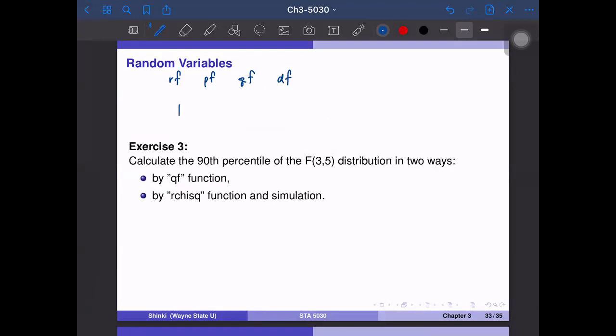For example, if you want to calculate probability of F distribution with df_1 equals 2 and df_2 equals 5 of is less than, for example, 0.8, then this is calculated by pf(0.8, df1 = 2, df2 = 5). In R, you can use this code to calculate this.